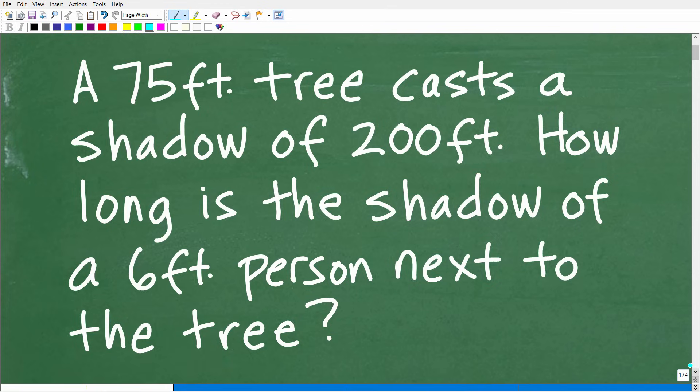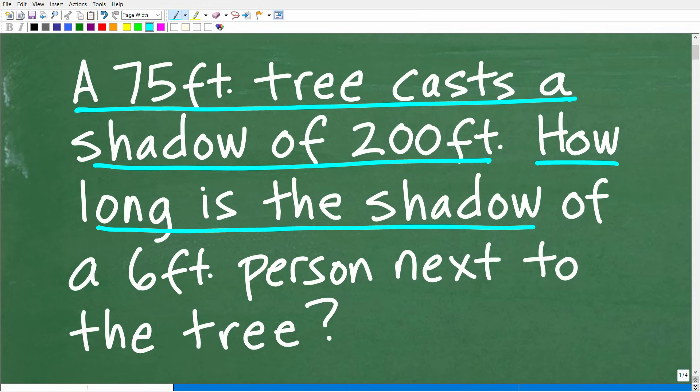Let me read you the problem. It is a 75-foot tree casts a shadow of 200 feet. How long is the shadow of a 6-foot person standing next to the tree?